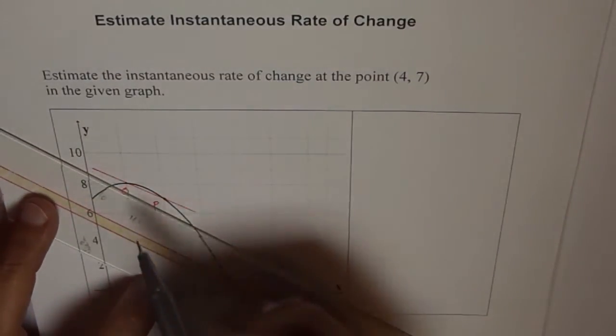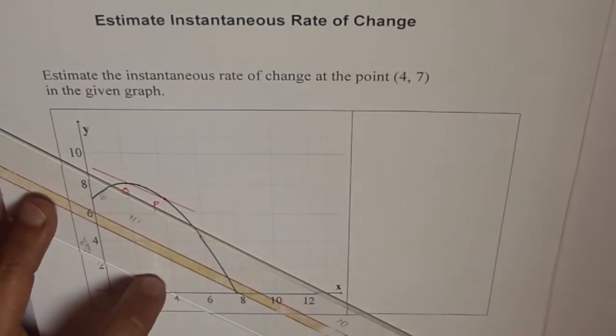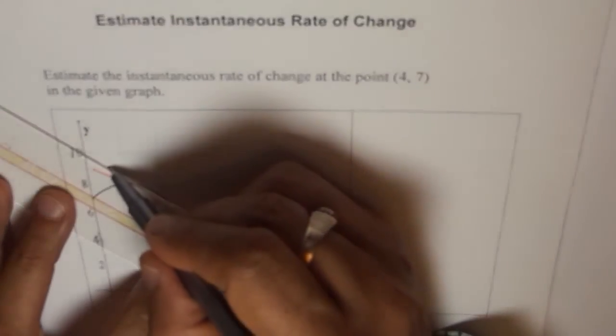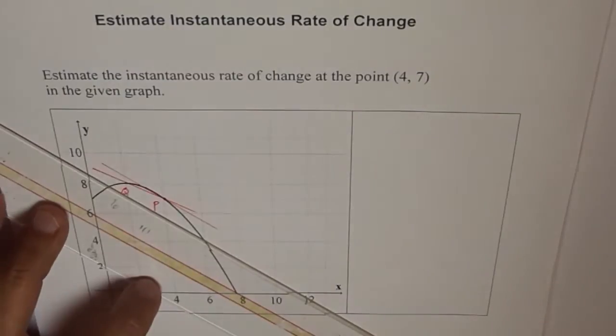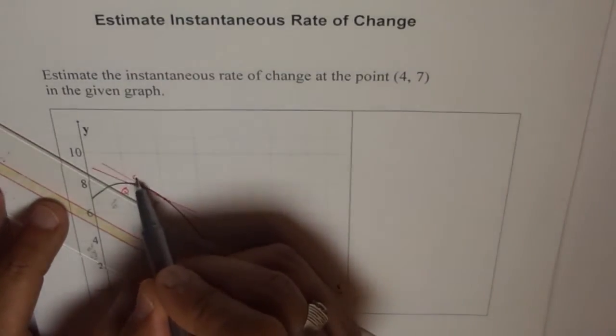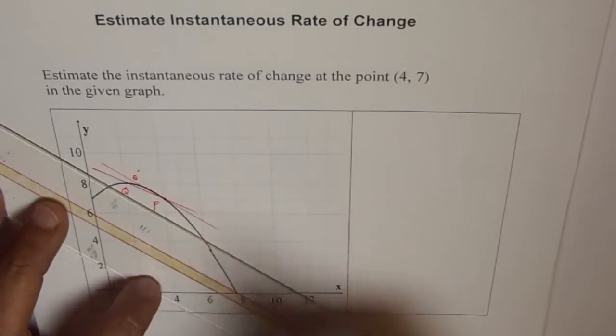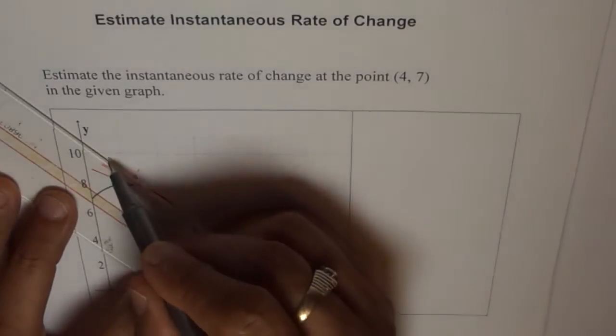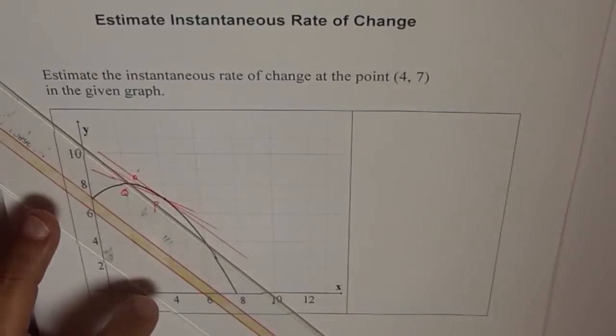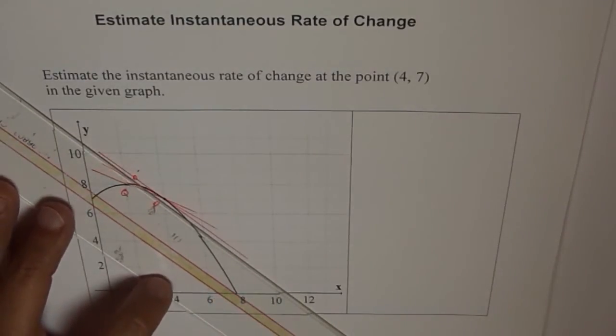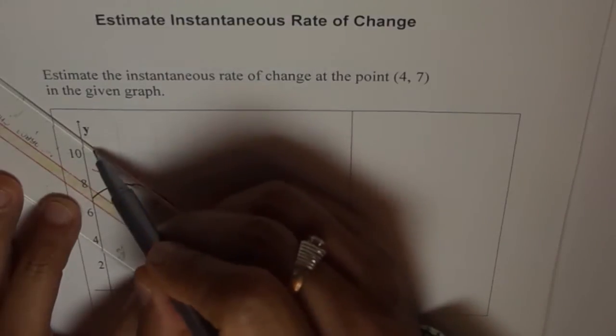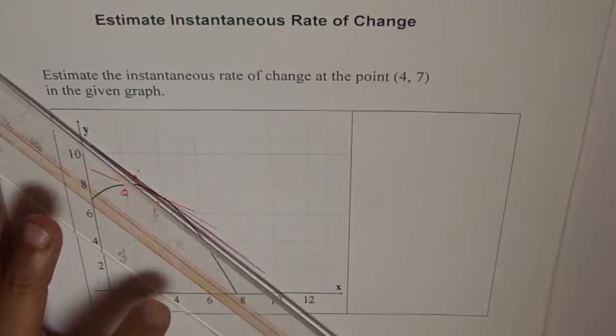Now what we will do is, we'll bring Q closer and closer. So as we bring Q closer to P, we get a series of secants going through P and these are my Qs, which are like Q dash, Q double dash, and we are basically coming closer and closer to P. And try to get a tangent there. Tangent is a point where we should expect the line to just touch the graph at that point. So I think this seems to be a fairly good approximation of our tangent. Let's see.